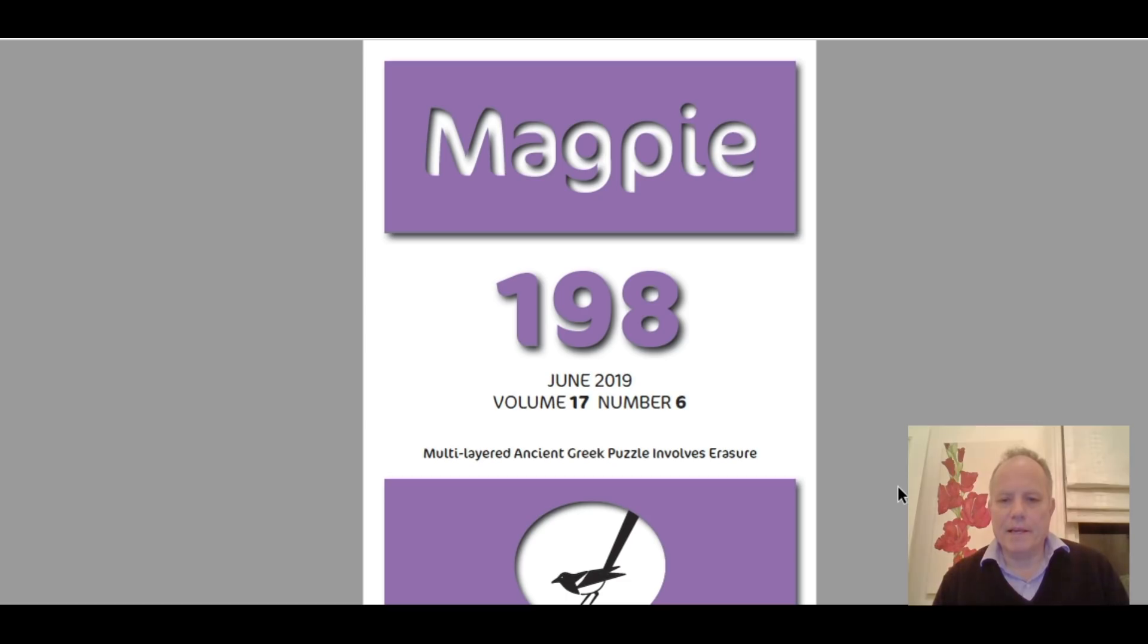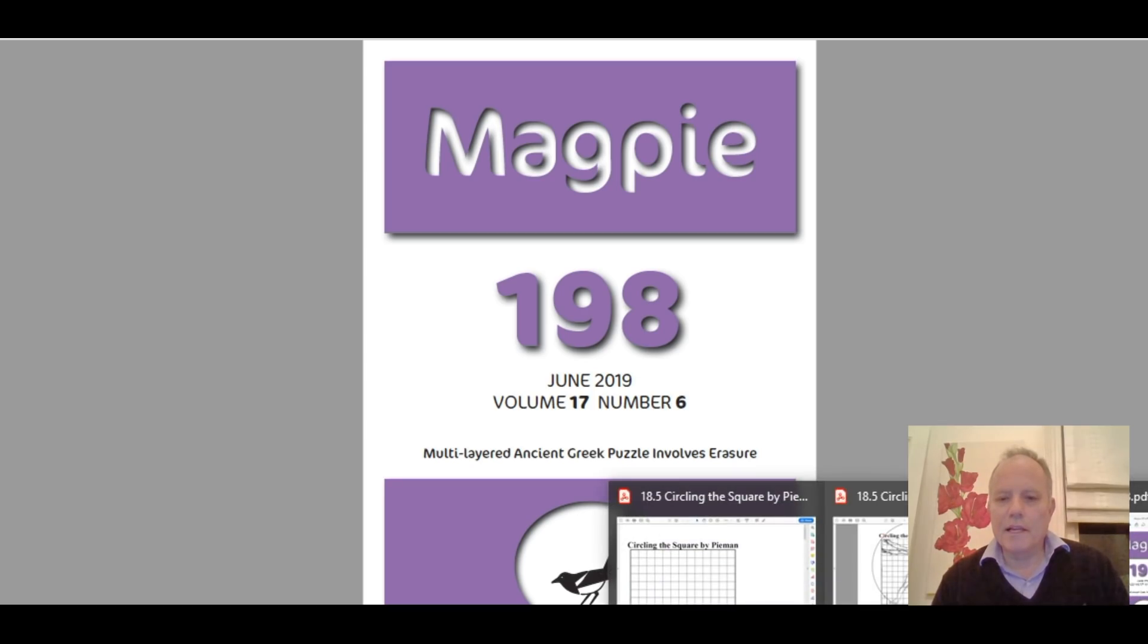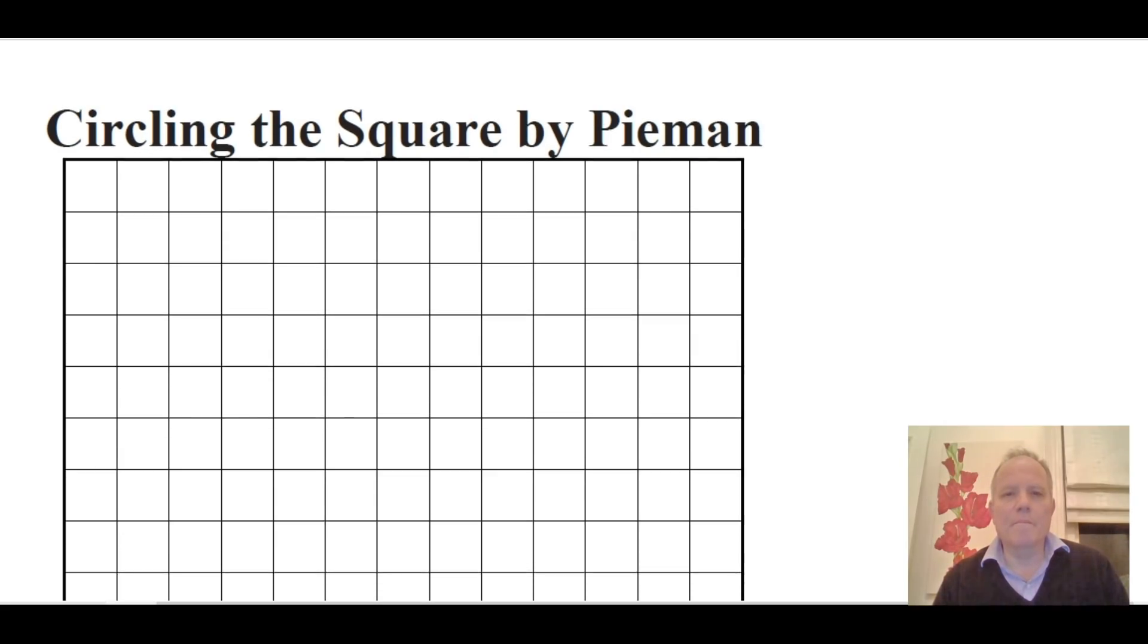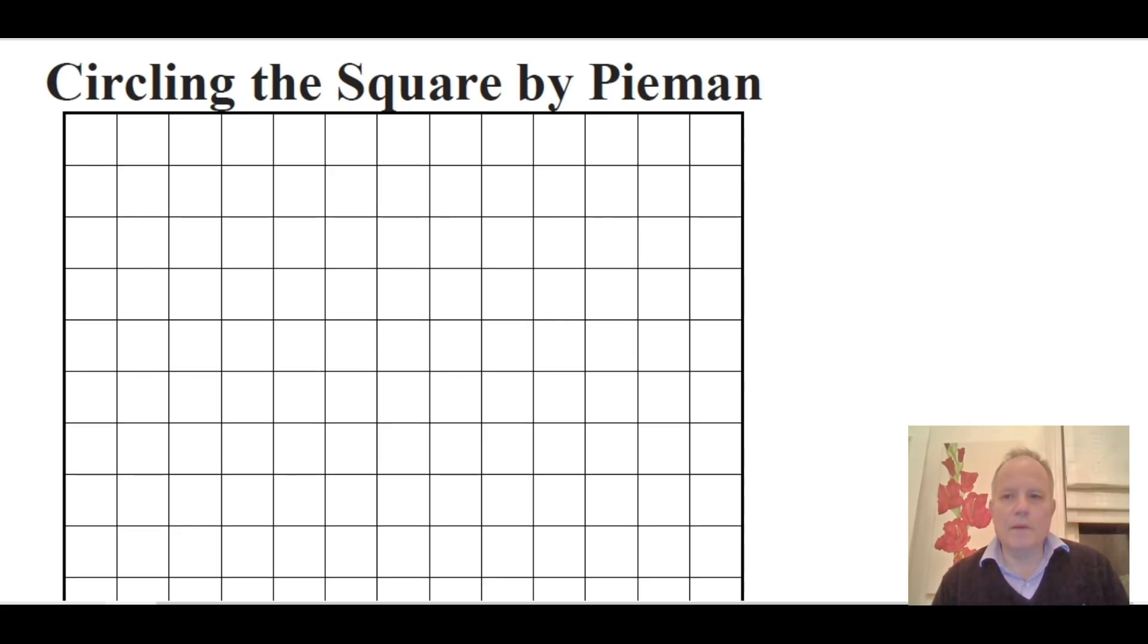So I'm going to take you back 15 years to a puzzle that appeared in the Magpie. We're up to volume 17 now, but this would have been in volume 2, back in the days when the magazine was sent out by post only. You could still subscribe to the Magpie now if you look it up under Piemag.com. Back in the early days, this puzzle appeared in issue 18, halfway through our second year. Pieman was Simon's name. The reason the Magpie is so called is because I was compiling as Mr. Magoo, and Simon took his name from the nursery rhyme and became Pieman.